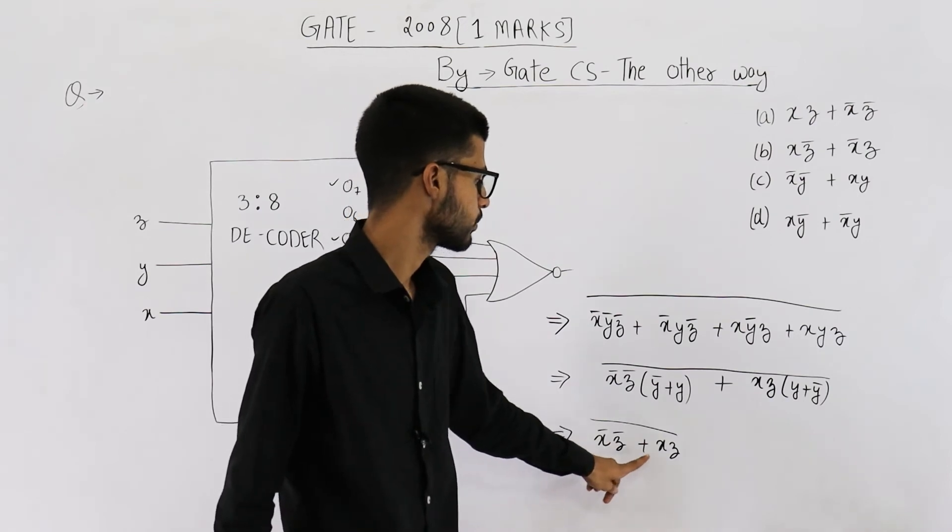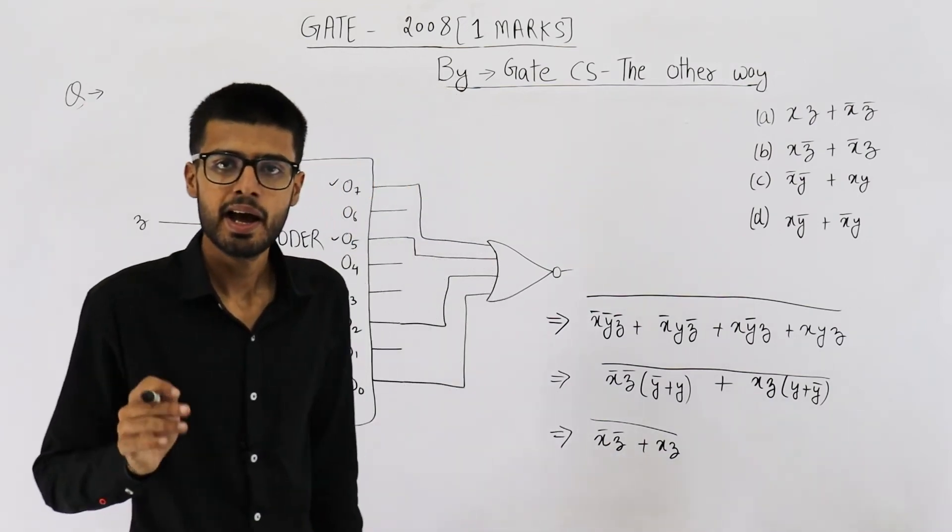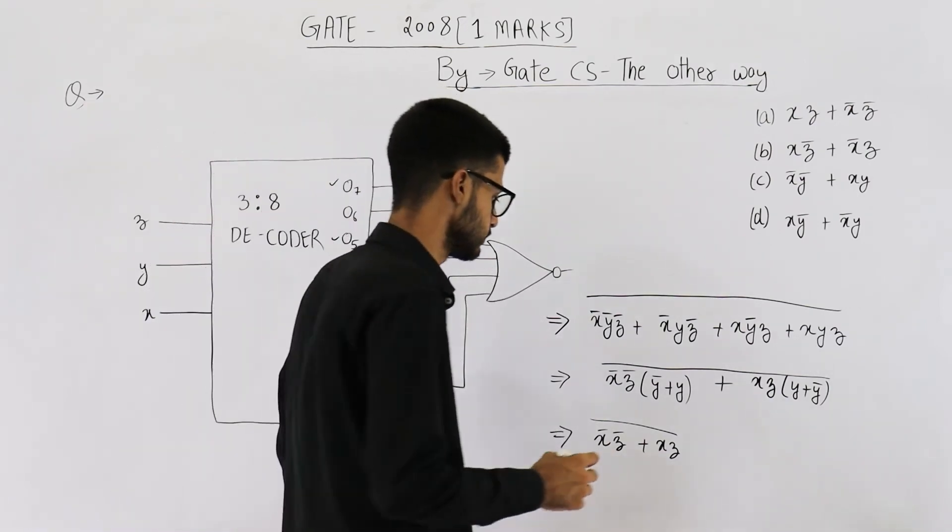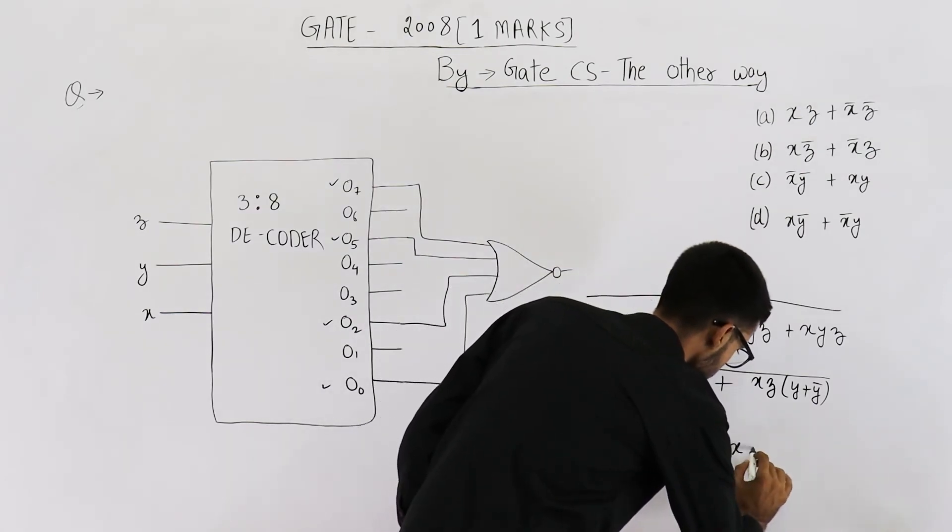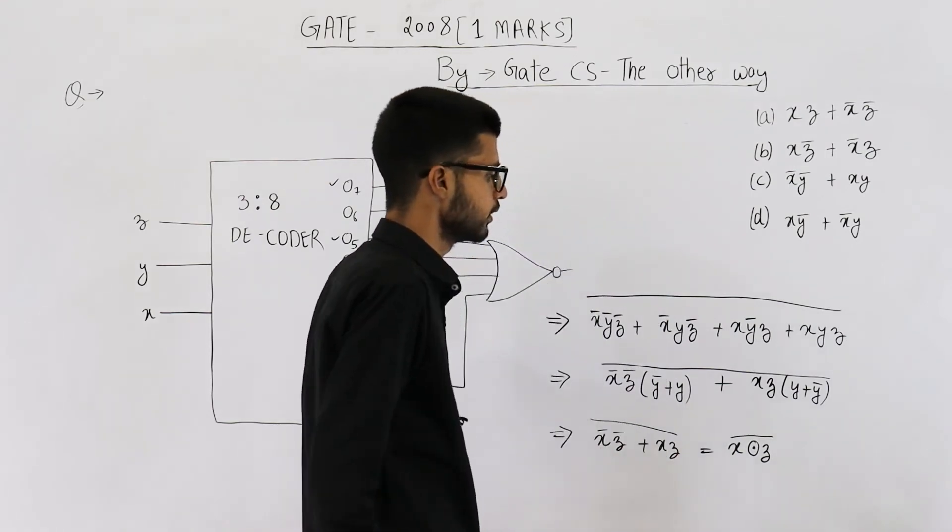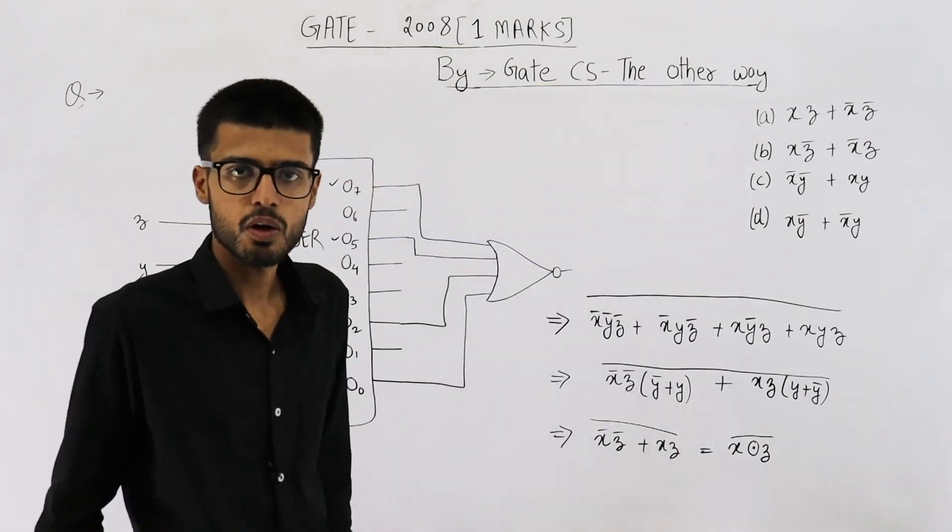Now x bar z bar plus x z is x XNOR z whole complement. And complement of XNOR is XOR. That means this is x XOR z.